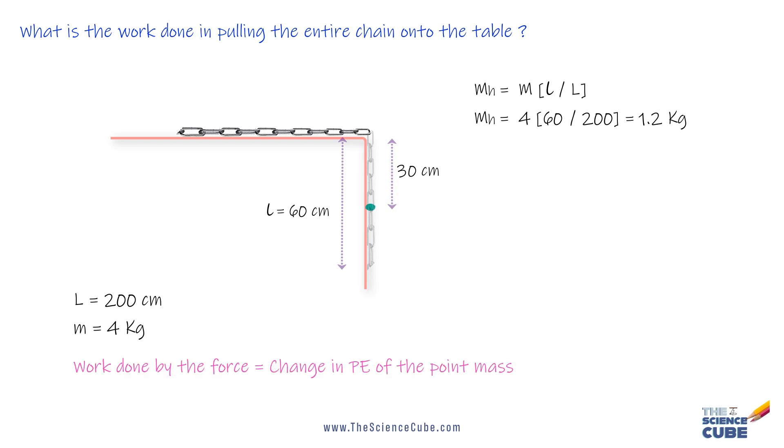Here the point mass is getting raised by 30 centimeters, so the work done can simply be written as W equals mgh, or 1.2 into 9.8 into 0.3, which equals 3.6 joules.